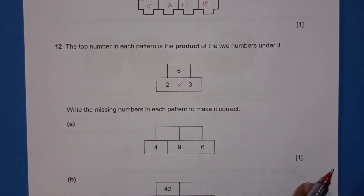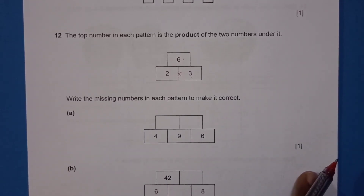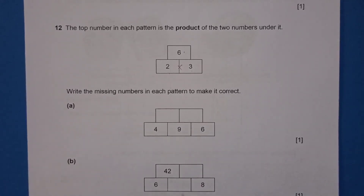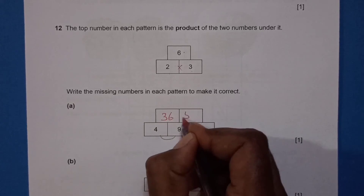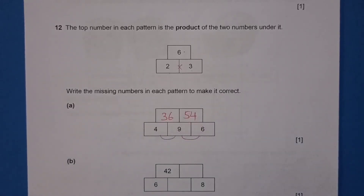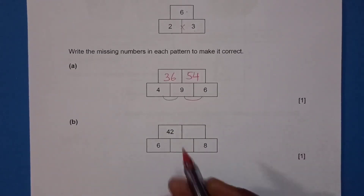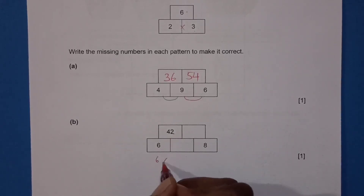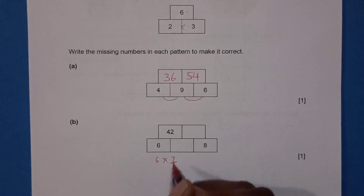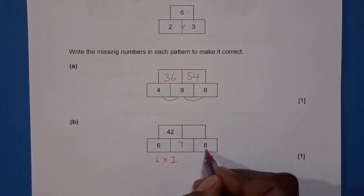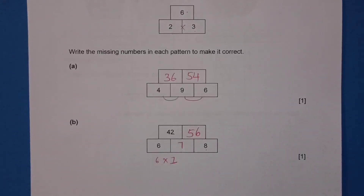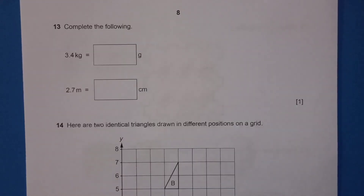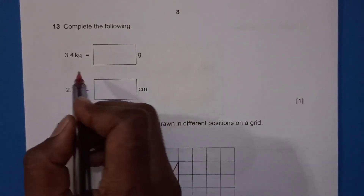Question 12: Write the missing number in each pattern to make it correct. For 4 times 9 equals 36, we write 36. Nine times 6 is 54. For Part B, 42 is on top — 6 times what gives 42? That is 6 times 7 equals 42. Then 7 times 8 is 56.